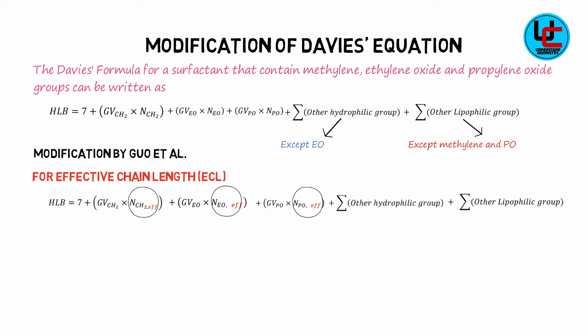As for straight alkyl chain, the fully stressed lipophilic chain length is directly proportional to number of methylene groups. Therefore it is reasonable to use the effective chain length to calculate HLB value.